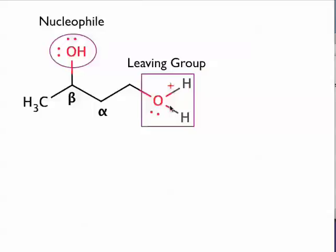We've changed this alcohol into a good leaving group, by adding acid. But this alcohol at the other end is a good nucleophile. So now we've got everything we need for SN2 substitution.